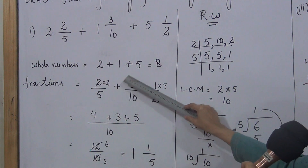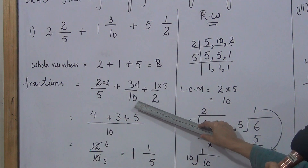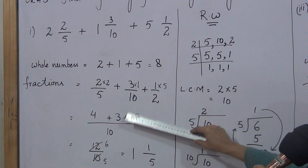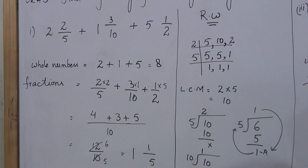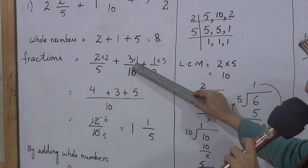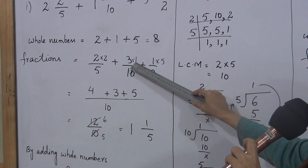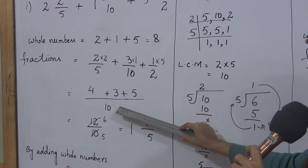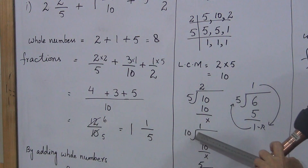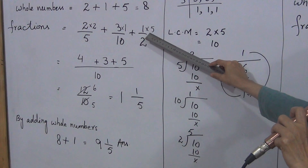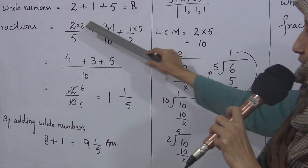Same step with the third fraction. The denominator is always the divisor. For the third fraction, LCM 10 divided by denominator 2 equals 5, and this multiplies the numerator. Now simplify each fraction numerator: 2 times 2 is 4 for the first, 1 times 3 is 3 for the second, and 5 times 1 is 5 for the third. The common denominator is 10.